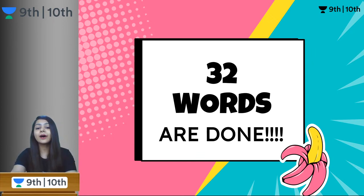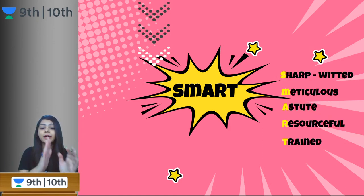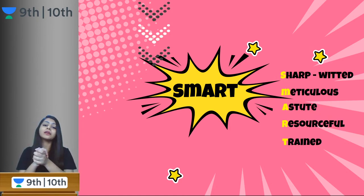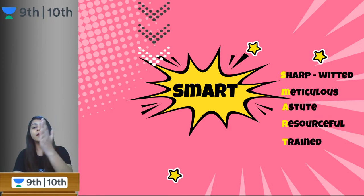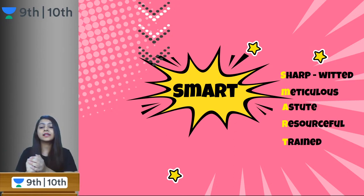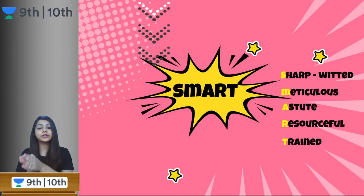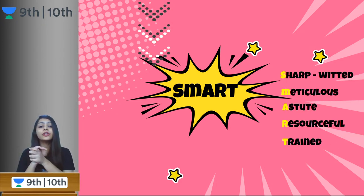Let us encounter the next 18. Starting with the 33rd word, the pair arising from SMART: S for sharp-witted, M for meticulous, A for astute, R for resourceful, and T for trained.